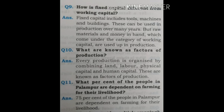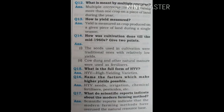Question 11: What percent of the people in Palampur are dependent on farming for their livelihood? 75% of the people in Palampur are dependent on farming for their livelihood. Question 12: What is meant by multiple cropping? Multiple cropping means growing more than one crop on a piece of land during the year. Question 13: How is yield measured? Yield is measured as crop produced on a given piece of land during a single season.